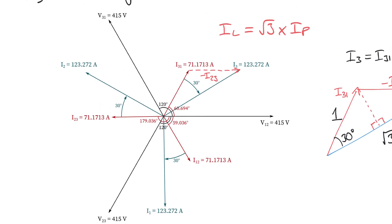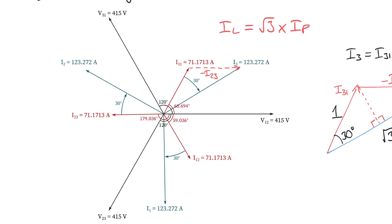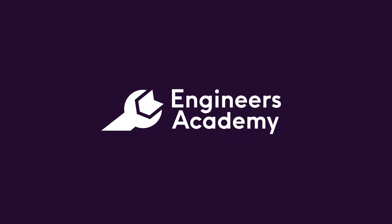I hope you found this video useful — first on handling a balanced delta network using complex values of impedance, how we go about working out the phase currents, the line currents, and finally how we can plot all of that on a resulting phasor diagram. Thank you.